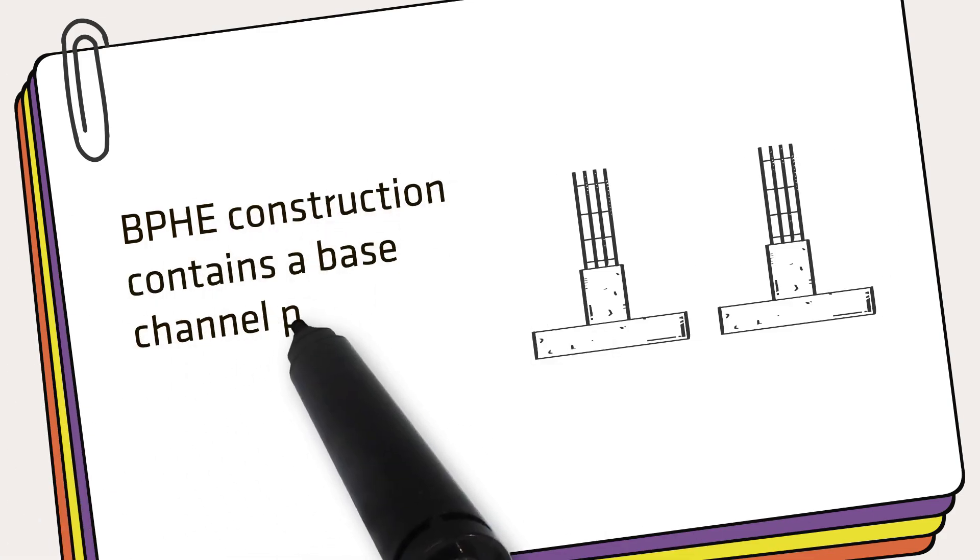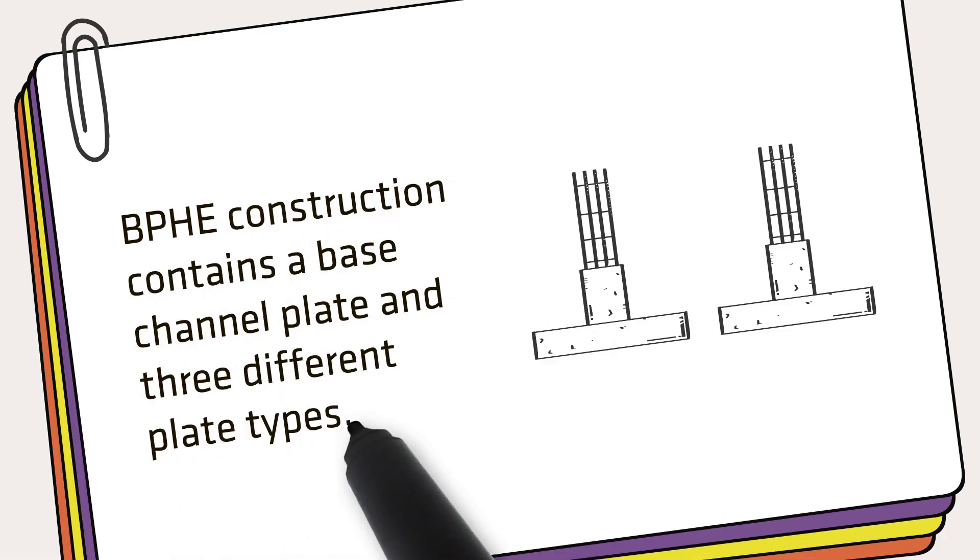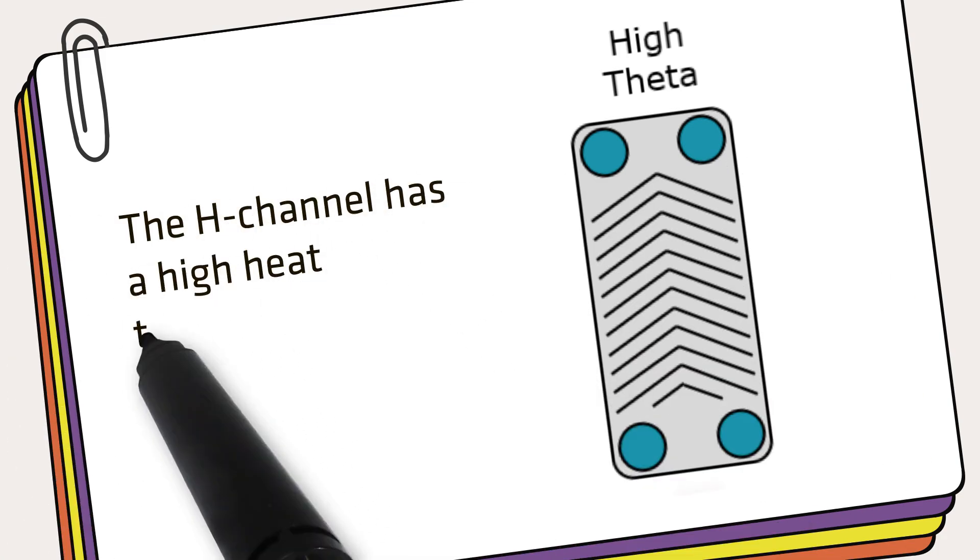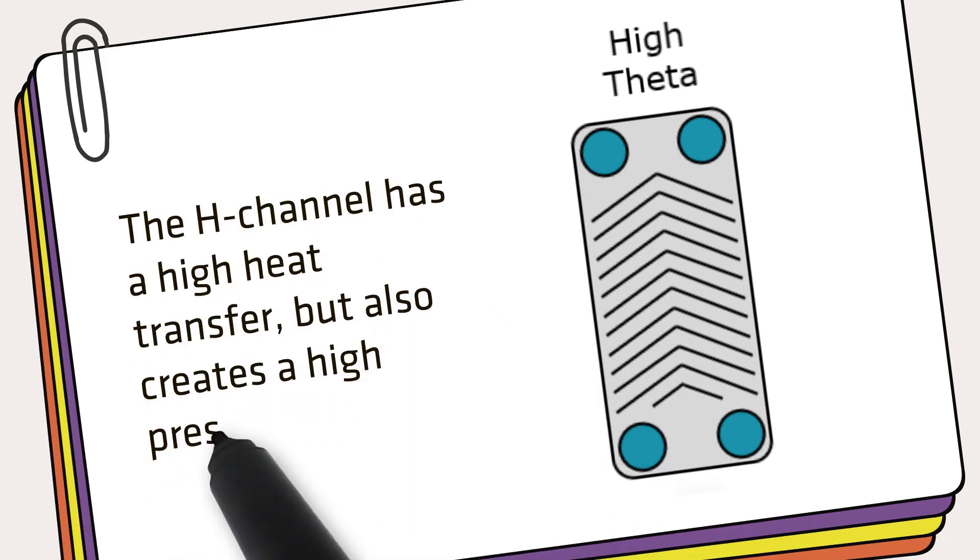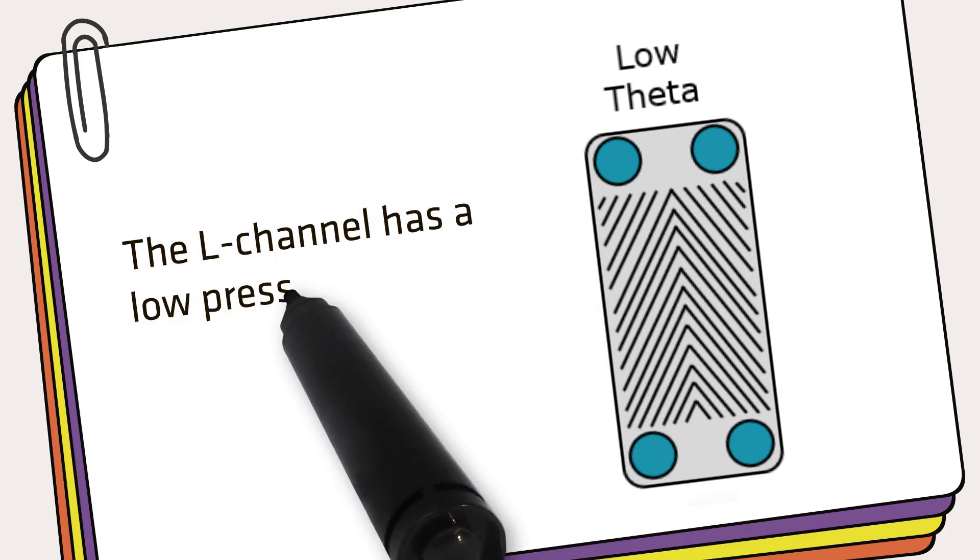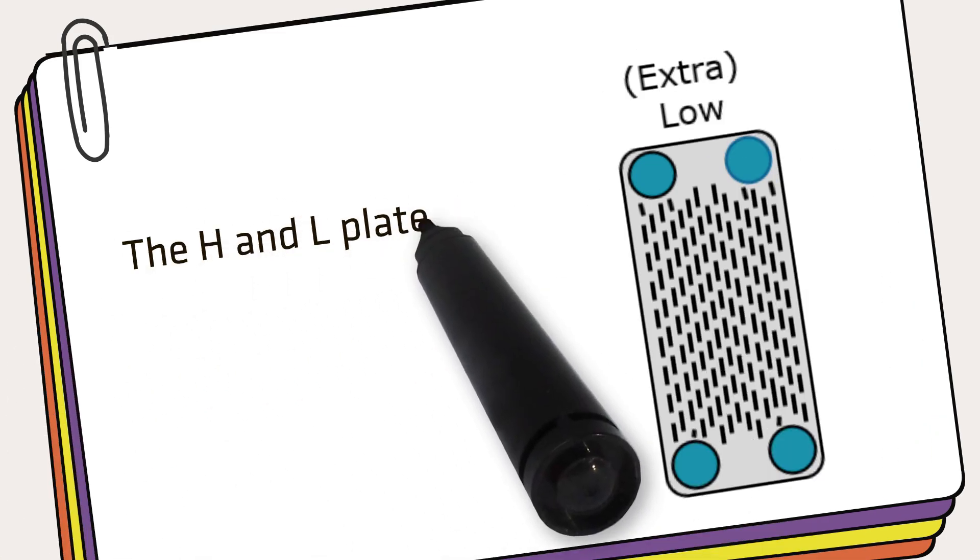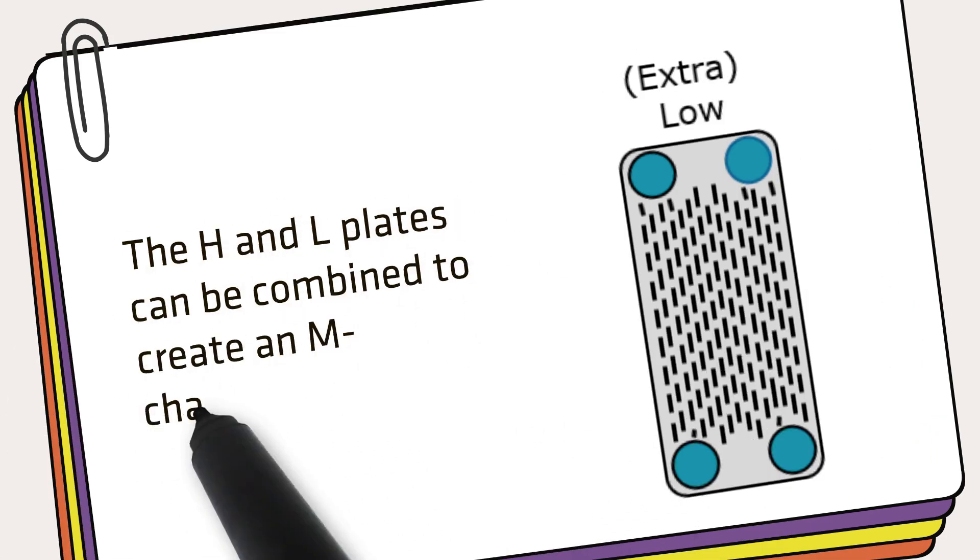BPHE construction contains a base channel plate and three different plate types. The H channel has a high heat transfer but also creates a high pressure drop. The L channel has a low pressure drop but less heat transfer. The H and L plates can be combined to create an M channel.